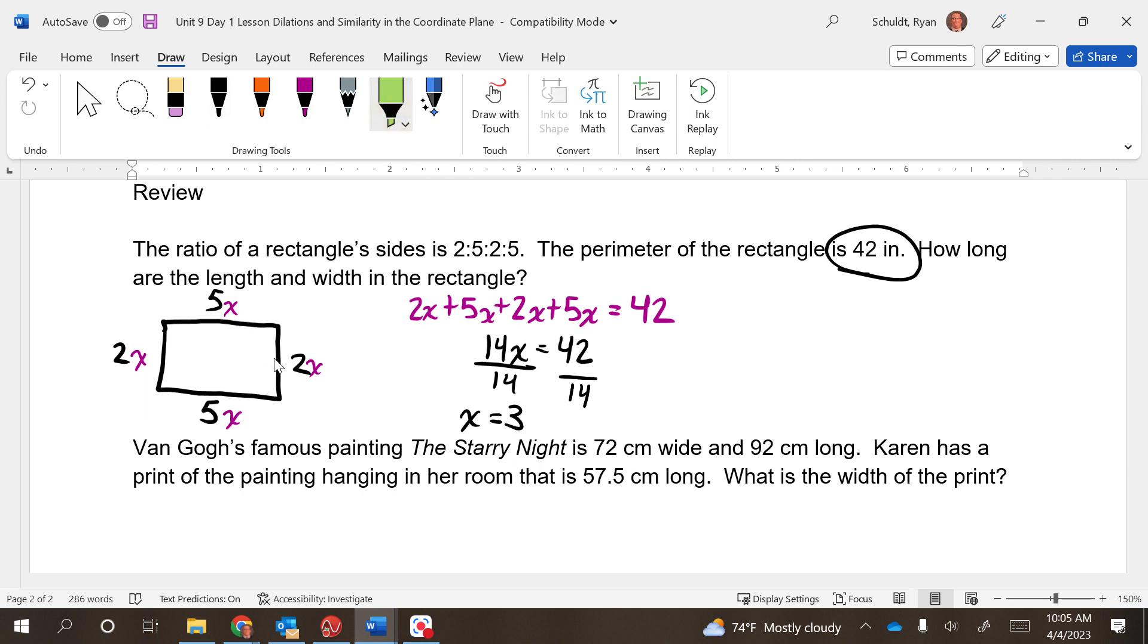Is that what they asked us for? No, they want us to find the length and the width. So for the length we have to do 5 times 3, which is 15 inches. For the width that's 2 times 3, it's going to be 6 inches. There's our length and our width: 15 inches and 6 inches.